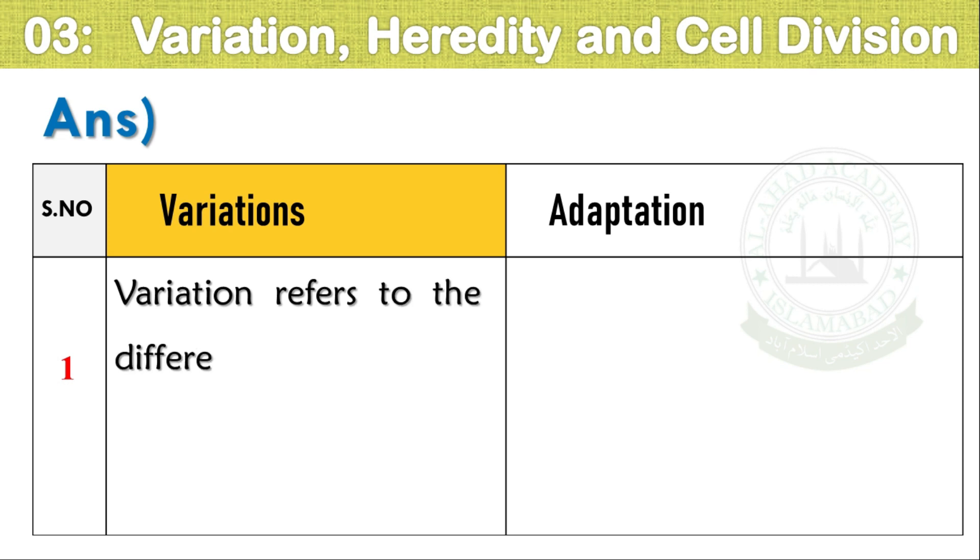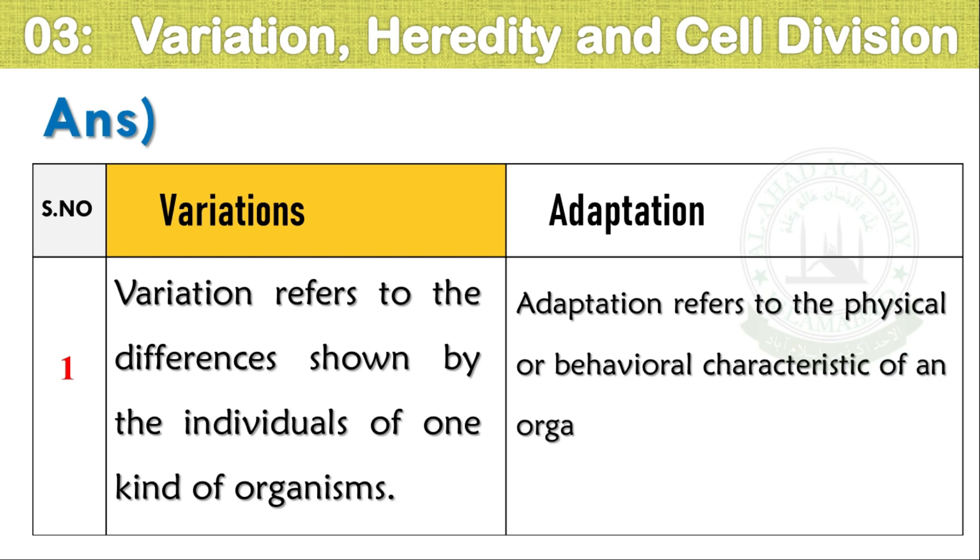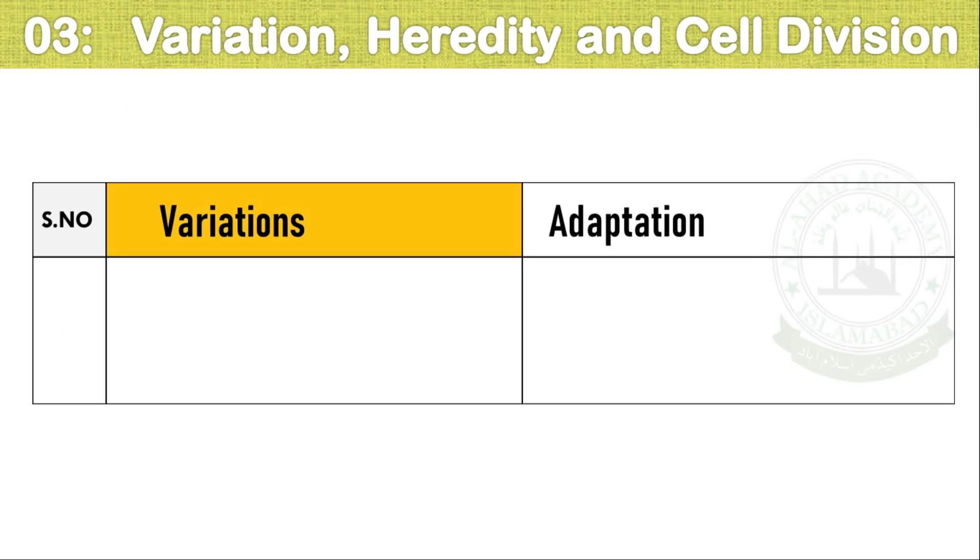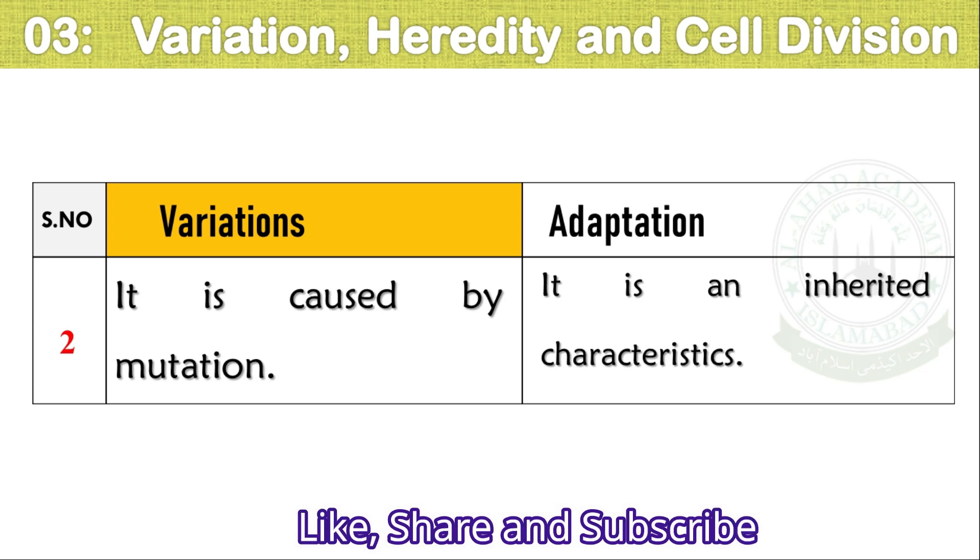Variations refers to the differences shown by the individuals of one kind of organisms. Adaptation refers to the physical or behavioral characteristics of an organism that helps an organism to survive. Variations are caused by mutation. Adaptations are inherited characteristics.